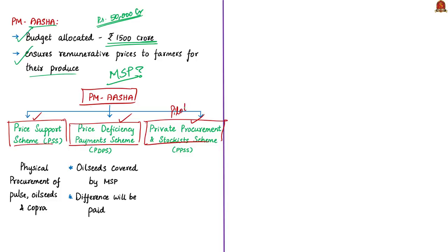PM ASHA has three sub-schemes. One is the Price Support Scheme (PSS), under which physical procurement of pulses, oil seeds, and copra will be done by central nodal agencies with a proactive role of state governments. In addition to the National Agricultural Cooperative Marketing Federation of India Limited (NAFED), the Food Corporation of India will also take up PSS operations. The procurement expenditure and losses due to procurement will be borne by the central government. Under the Price Deficiency Payment Scheme (PDPS), all oil seeds for which MSP is notified will be covered — direct payment of the difference between MSP and the selling price will be made to pre-registered farmers selling in notified market yards through a transparent auction process.